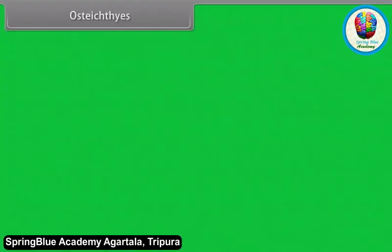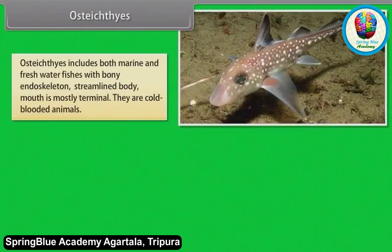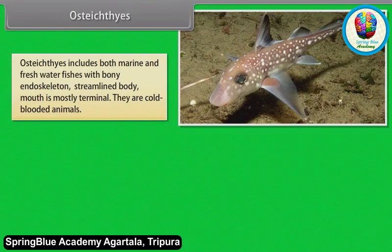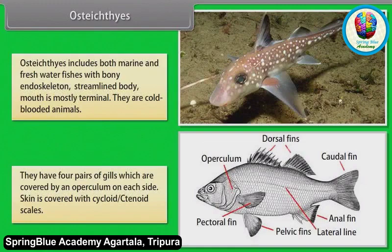Osteichthyes includes both marine and freshwater fishes with bony endoskeleton and streamlined body. Mouth is mostly terminal. They are cold-blooded animals. They have four pairs of gills, which are covered by an operculum on each side. Skin is covered with cycloid or ctenoid scales.